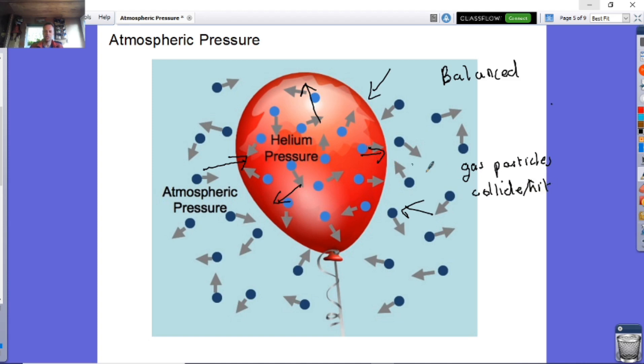And I'm going to call this the balloon wall. They hit that wall and therefore they're going to create a force, and they create that force over an area, and therefore this creates something called atmospheric pressure.